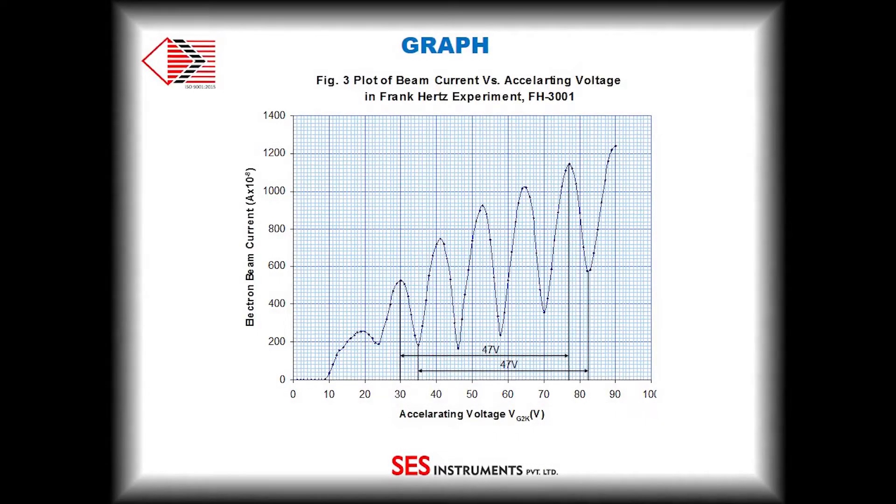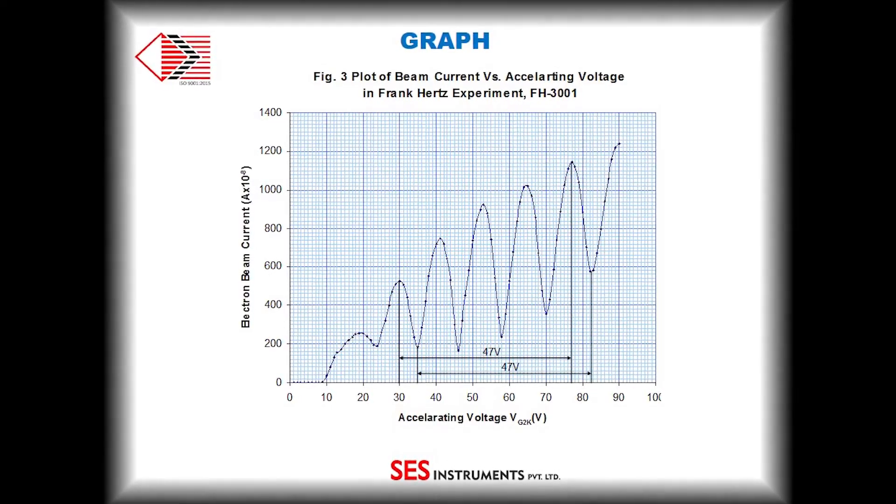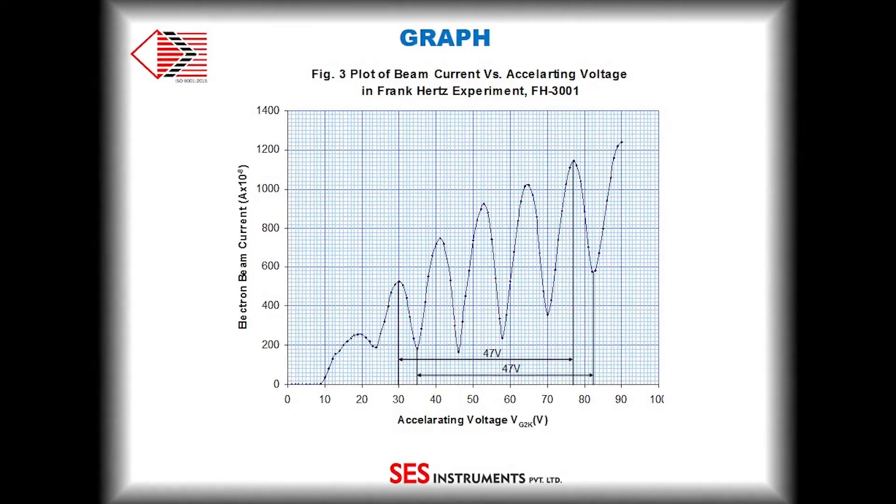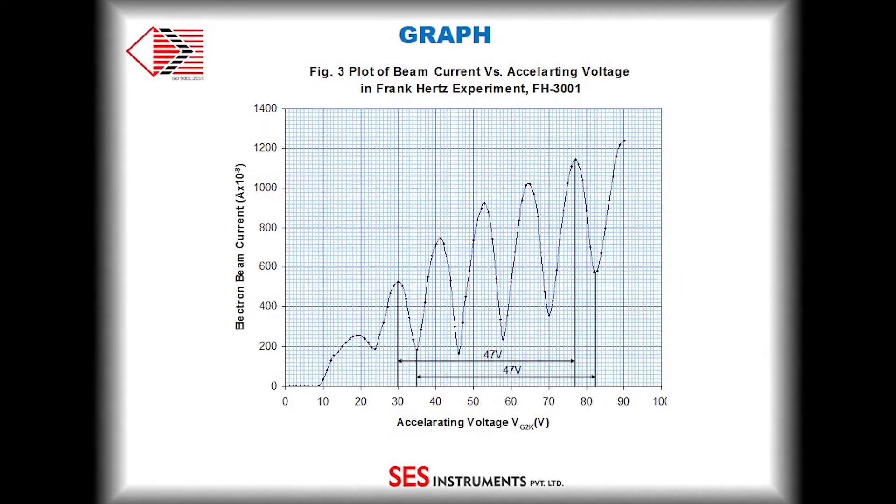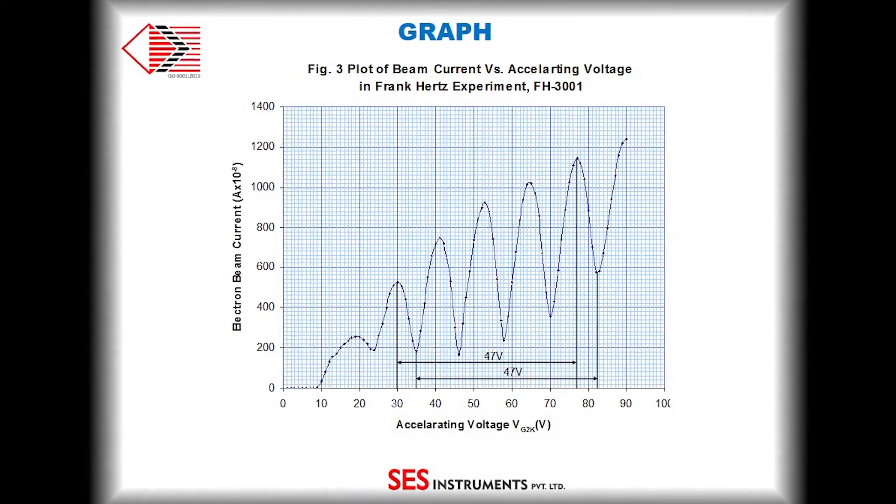Next, we plot the graph between accelerating potential and electron beam current, with VG2K at X-axis and current on Y-axis.